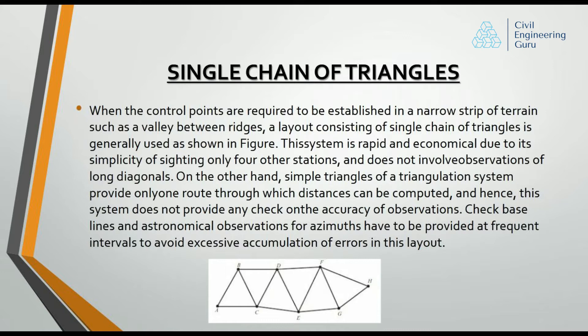On the other hand, simple triangles of a triangulation system provide only one route through which distances can be computed, and hence this system does not provide any check on the accuracy of observations. Check baselines and astronomical observations for azimuths have to be provided at frequent intervals to avoid excessive accumulation of errors in this layout.